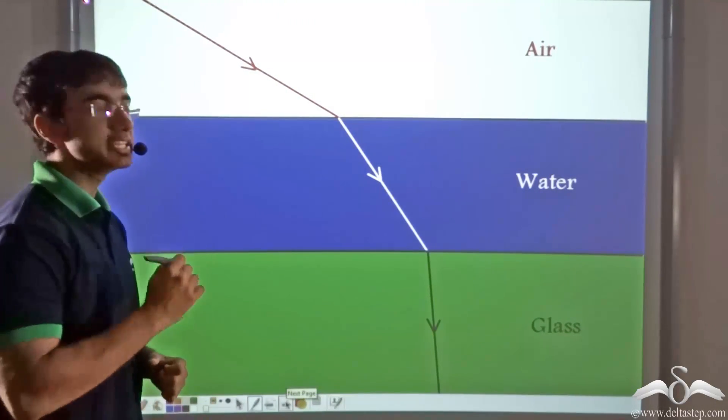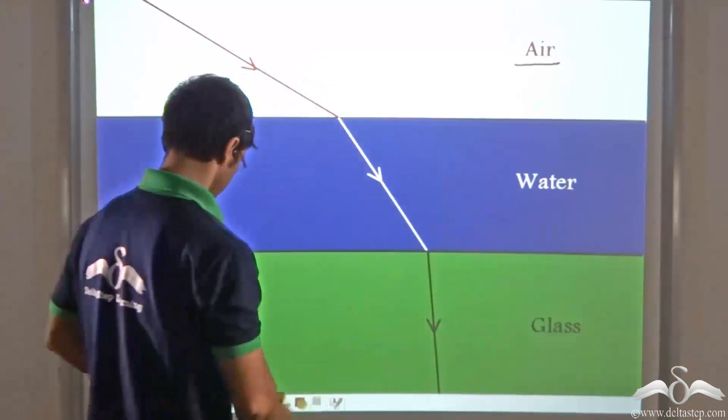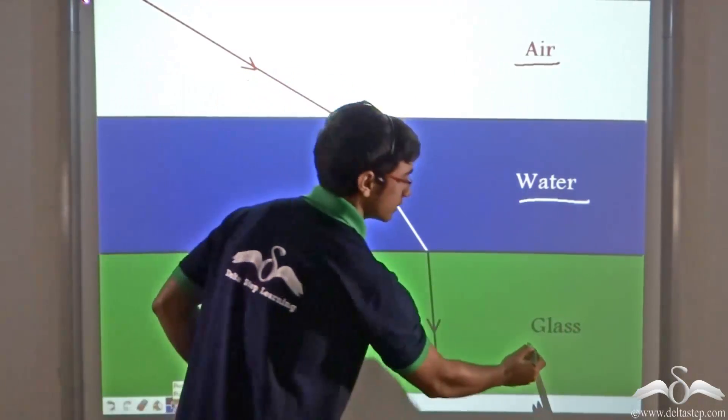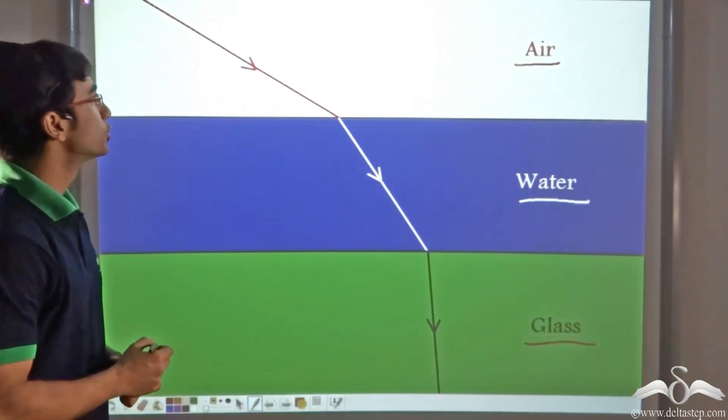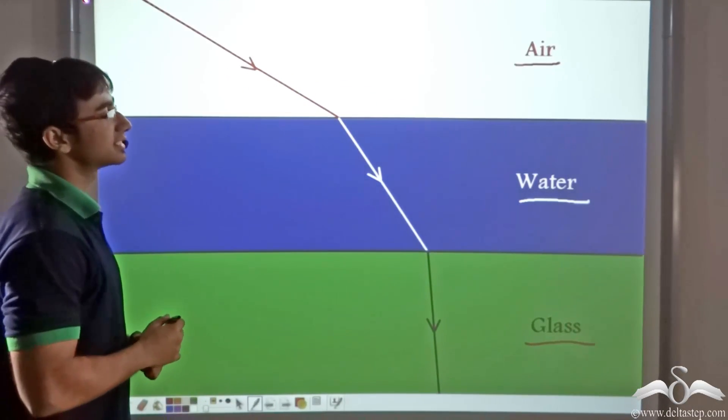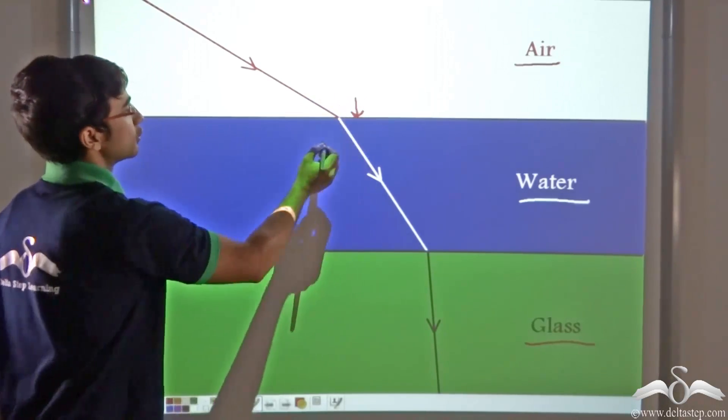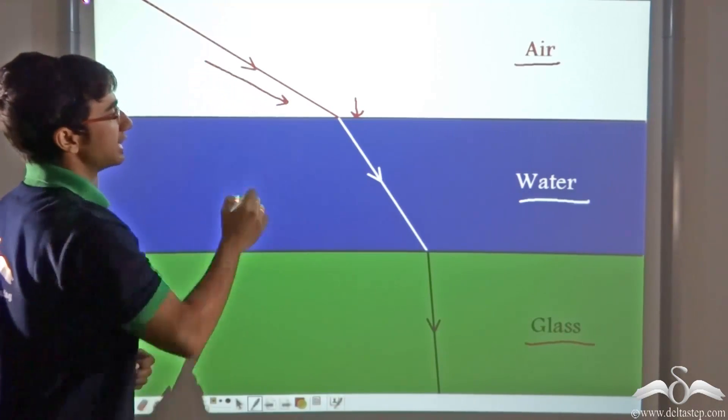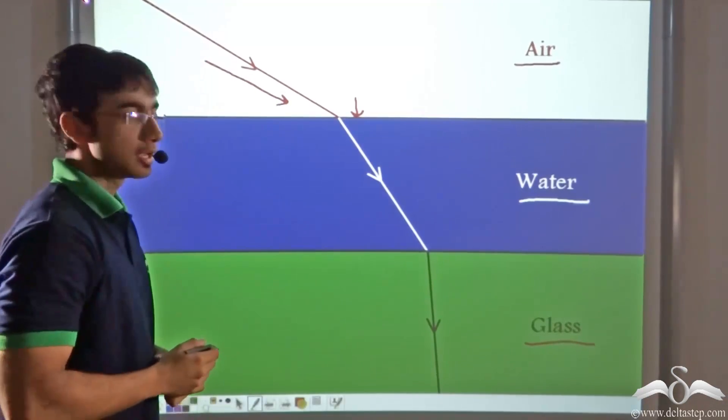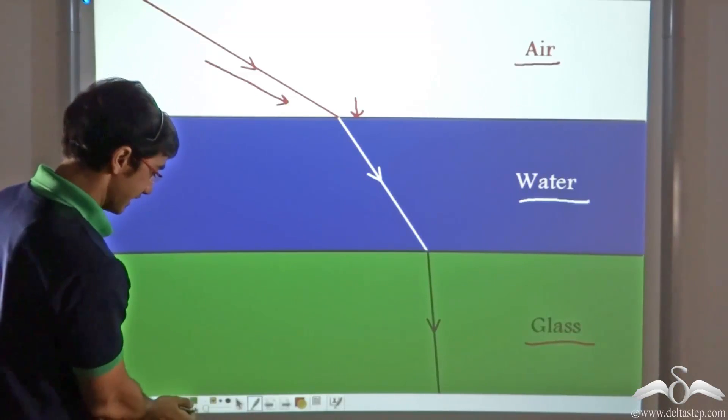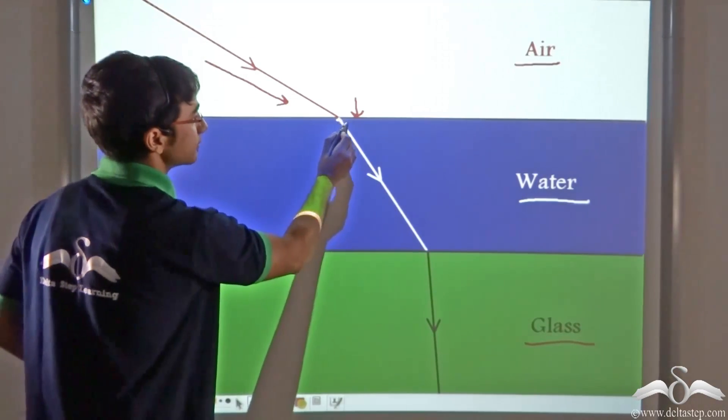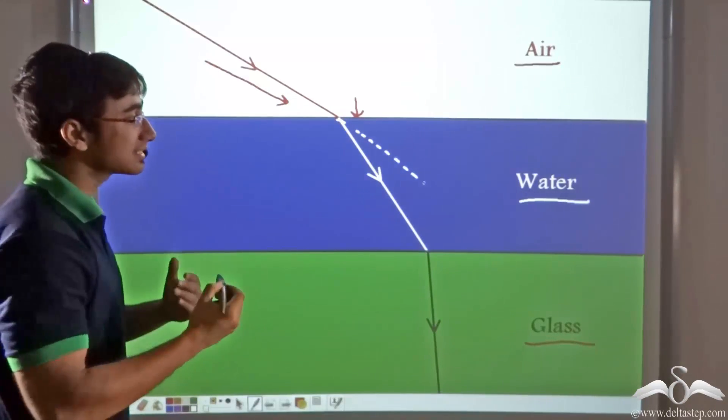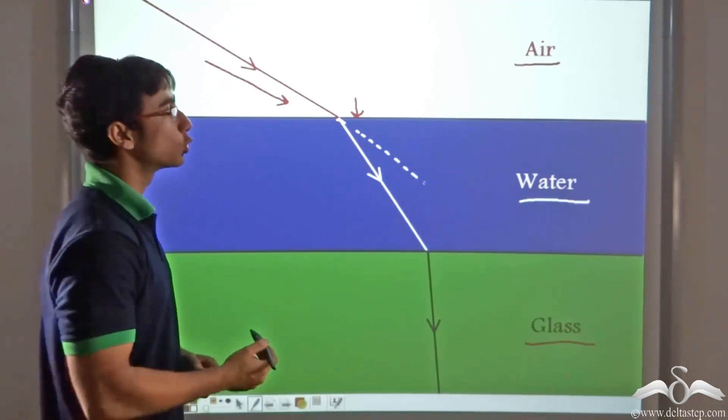Here you see there are three media: air, water, and glass. Now you can see that a ray of light is incident on the air-water interface from air. When the ray of light hits the air-water interface, it travels inside water. But as you can see closely, it does not travel in a straight line. It bends from its original path. This happens because there is a change in medium on going from air to water.